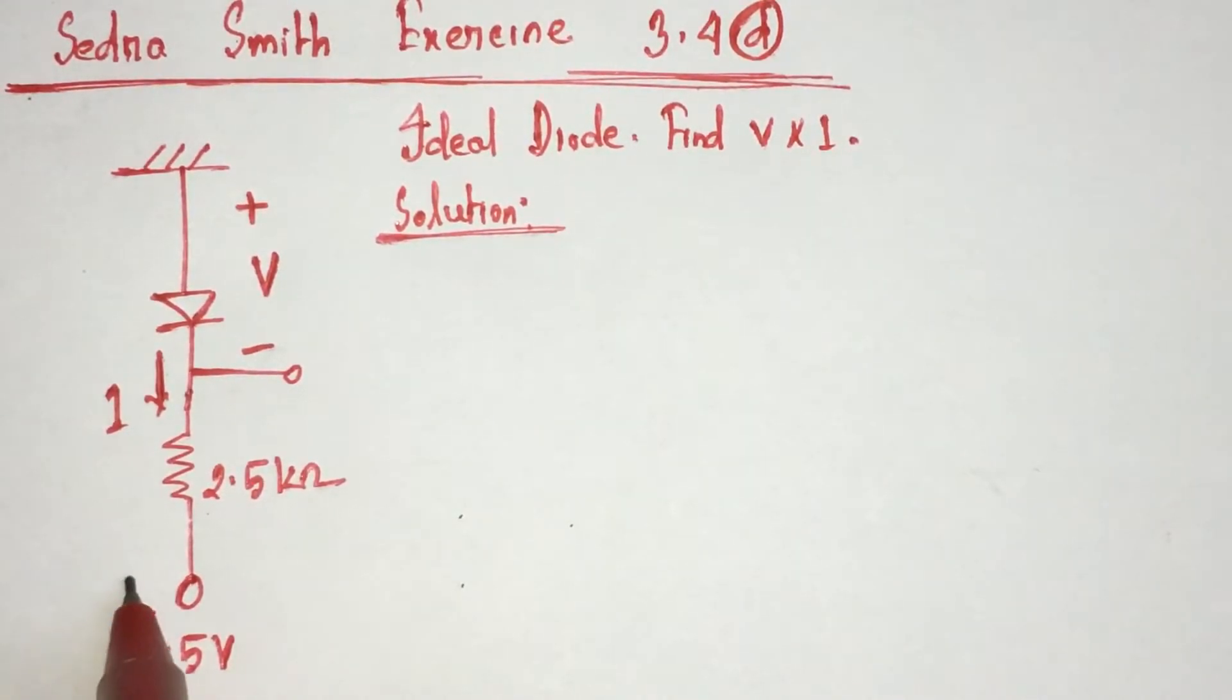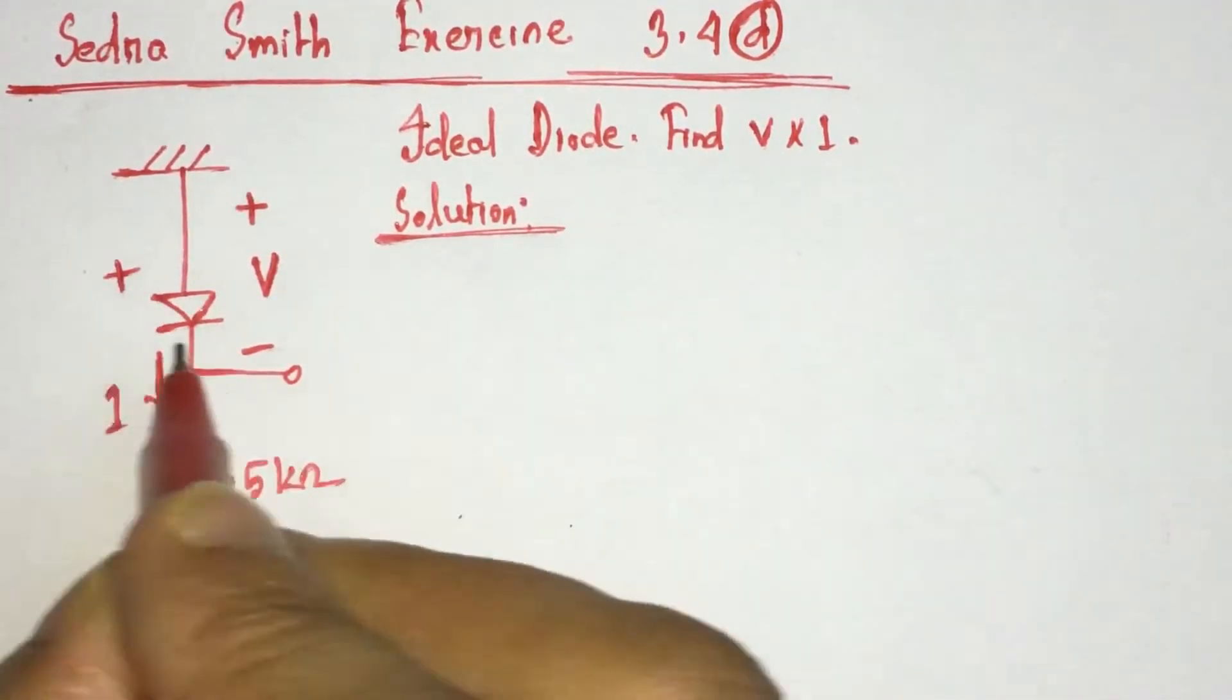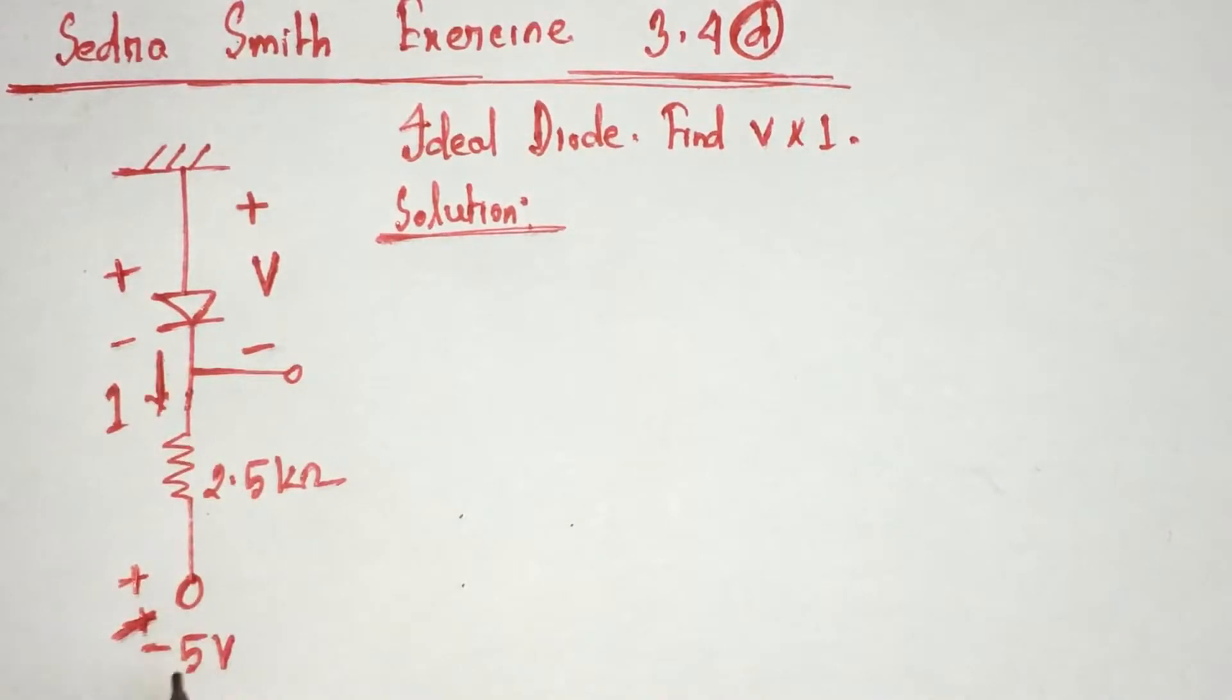And this is positive. This is the positive end of diode and this is the negative end of diode. We see that the biasing voltage is minus 5 volt.